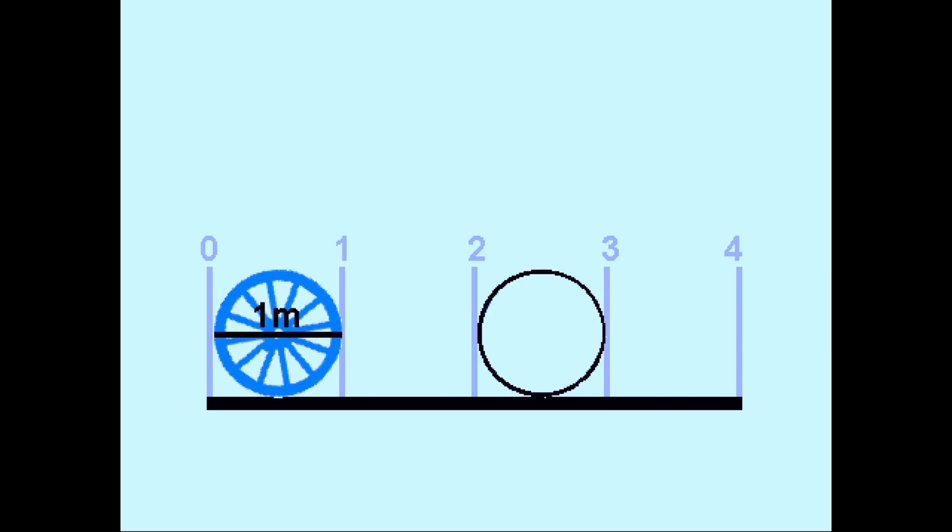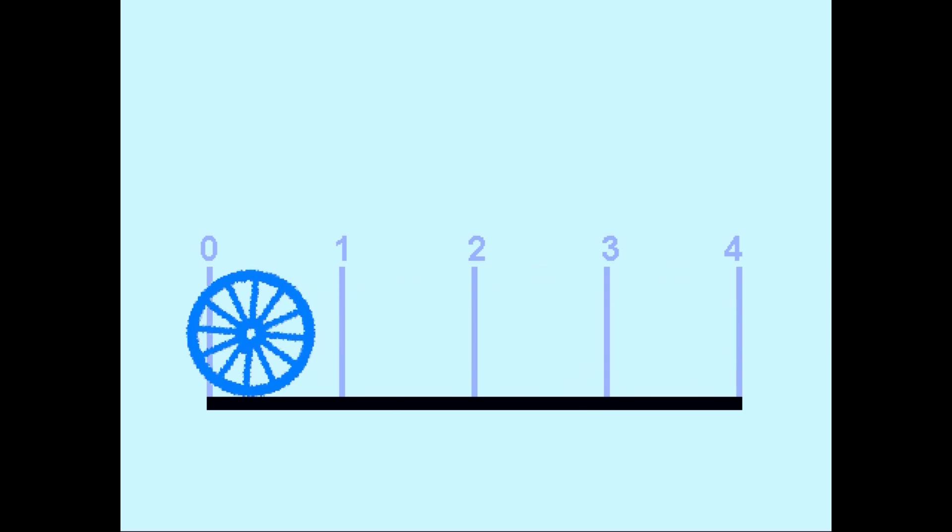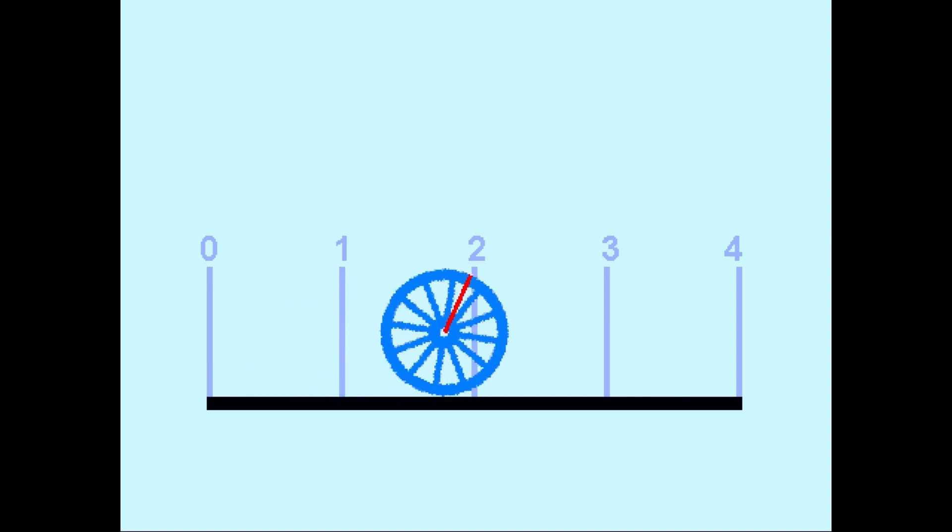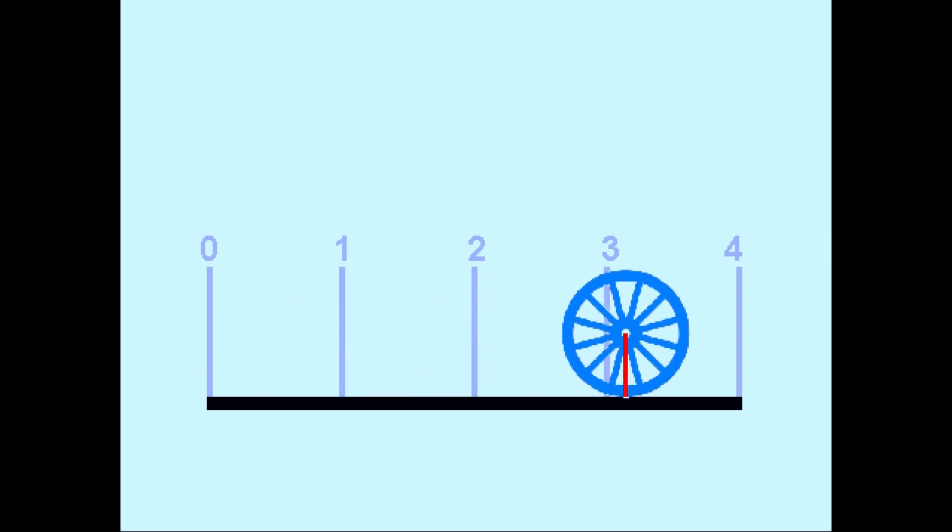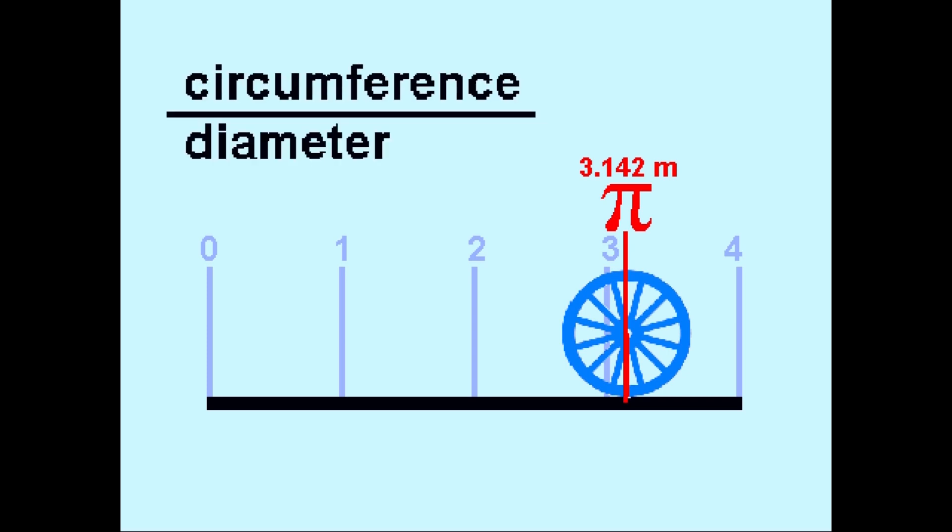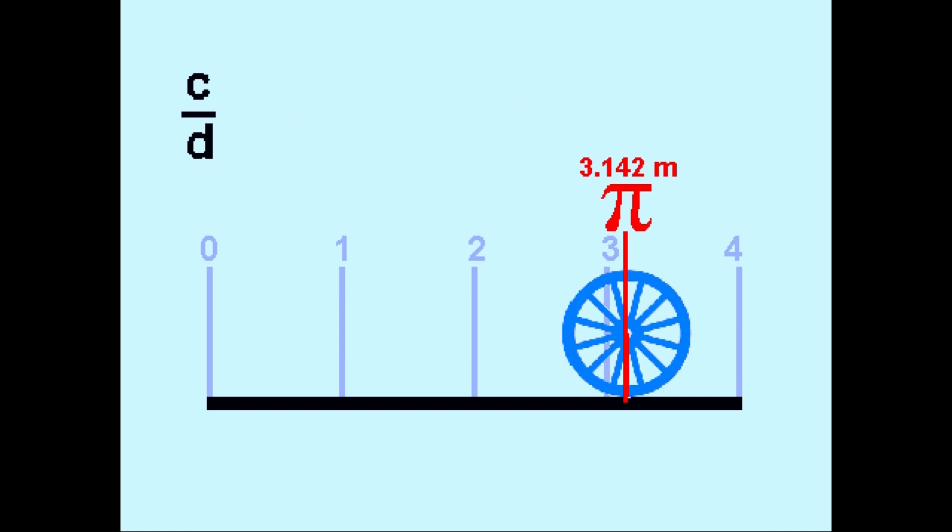Imagine a wheel with a 1 meter diameter. When it completes one full revolution and covers its perimeter or circumference, it will have travelled approximately 3.142 meters. Even a wheel with a different diameter, the ratio of circumference to diameter stays the same. This constant is called pi.